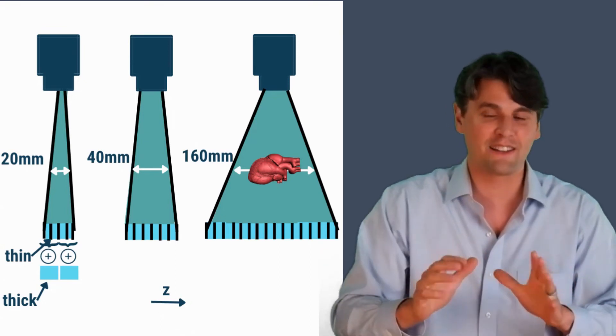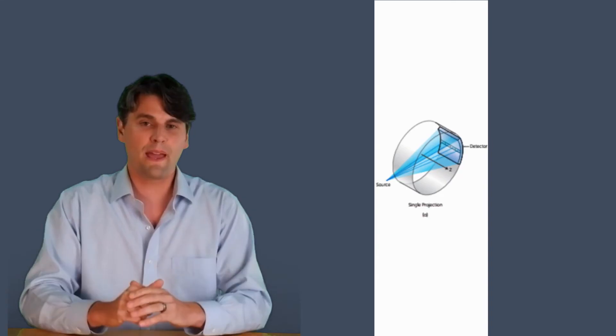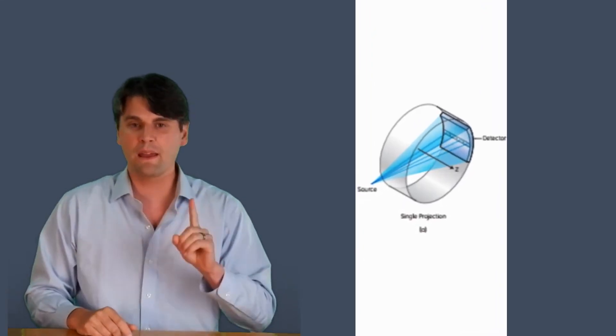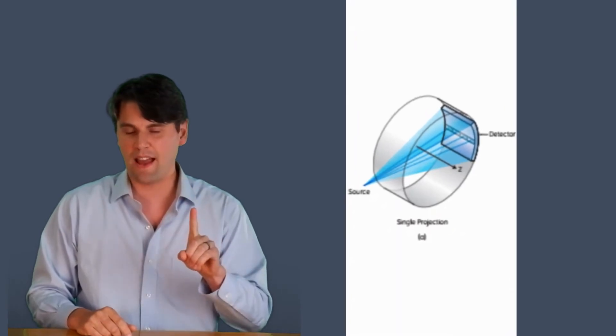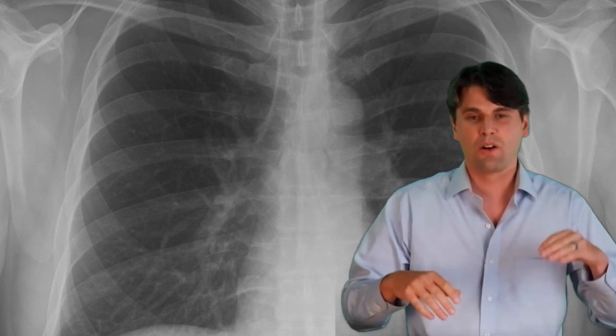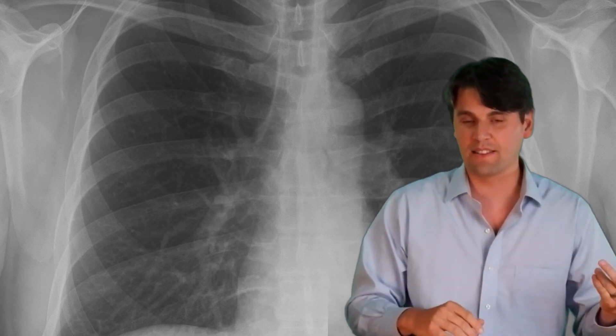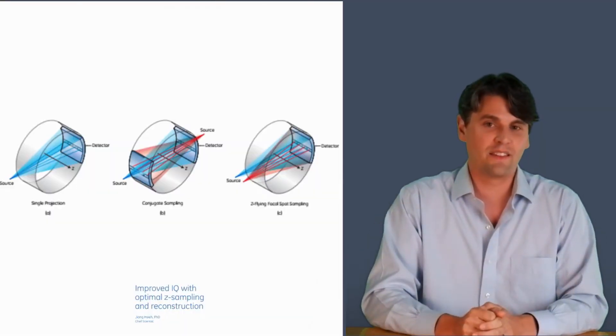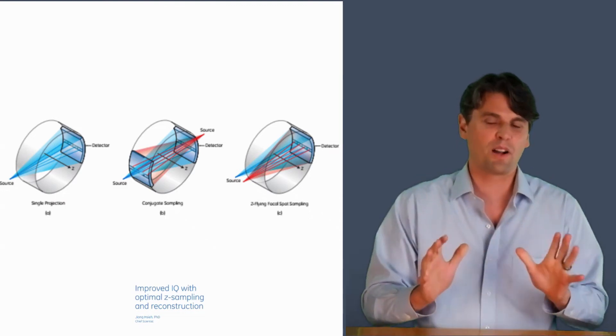To make images the conventional way, you'd be making one image per one row in the detector. When the systems were first introduced, all the vendors were talking about the number of slices equal to the number of rows in the detector.